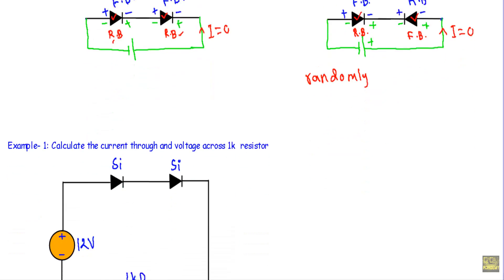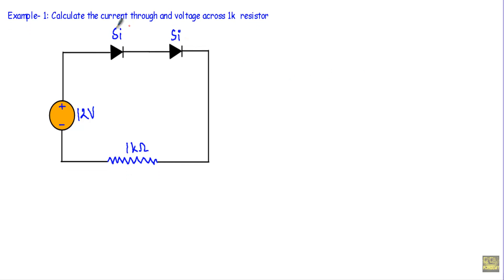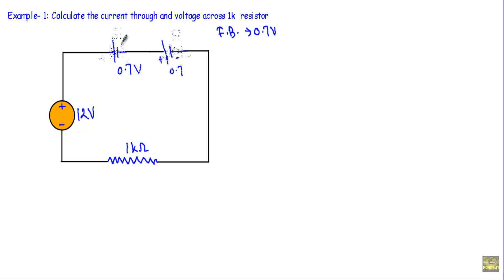Now let me show you some examples of circuits in which diodes are connected in series. In Example 1, calculate the current through and voltage across a 1kΩ resistor. The positive terminal connects to the P side of both silicon diodes and the negative terminal to the N side — so both diodes are in forward bias. I will replace them with 0.7V voltage sources.